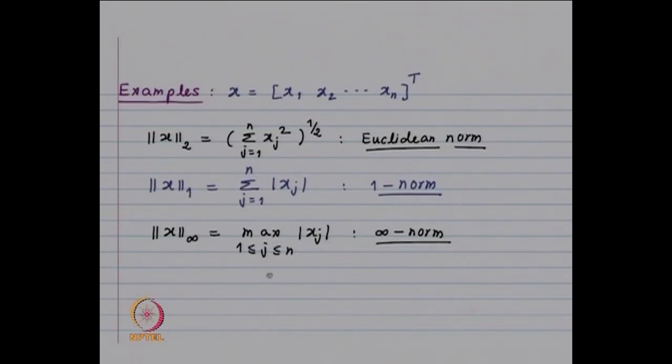The Euclidean norm is ||x||₂ = (Σⱼ xⱼ²)^(1/2). Then ||x||₁ = Σⱼ |xⱼ|, and ||x||∞ = max |xⱼ| for 1 ≤ j ≤ n. It is easy to verify that all three definitions satisfy the three properties of the norm. For the Euclidean norm, you are considering the sum of squares and taking the positive square root, so it is ≥ 0. If it equals 0, then each component must be 0, meaning x is the zero vector, and if x is zero, the norm is 0.